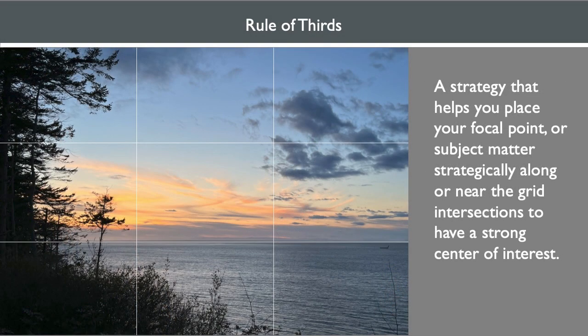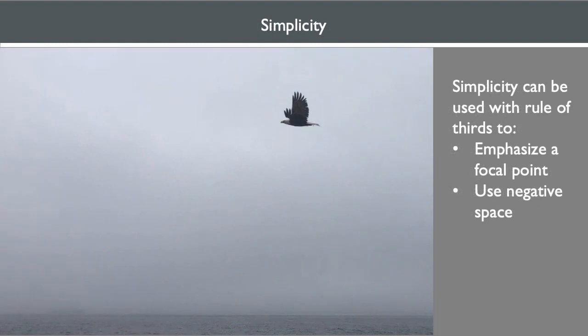In this class, you're going to learn about using the rule of thirds — a compositional strategy that helps you place your focal point or subject matter strategically along the grid intersections to have a stronger center of interest. Simplicity is another way to improve composition that works well with the rule of thirds. Place your focal point along the intersection of the grid lines or in one of the quadrants. The foreground or background should be simple or complementary to the center of interest, often referred to as negative space. Negative space is just as important as the focal point, as it effectively works for emphasis on your subject matter.